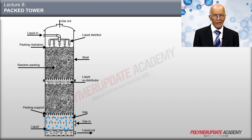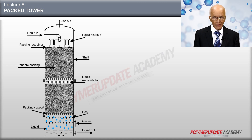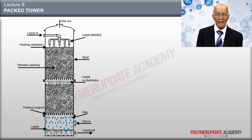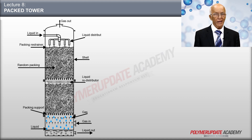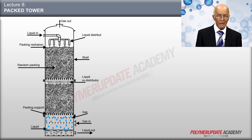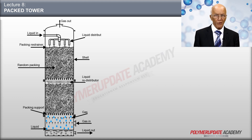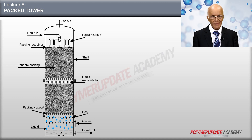After a certain height, there is a liquid redistributor, because packing loses its efficiency after a certain height. As we go above, there is a packing retaining grid, because sometimes due to a surge in gas velocity, packing may be carried away from the column. Above that, there is a packing support grid over which there is a liquid distribution system, and then we have a gas outlet.